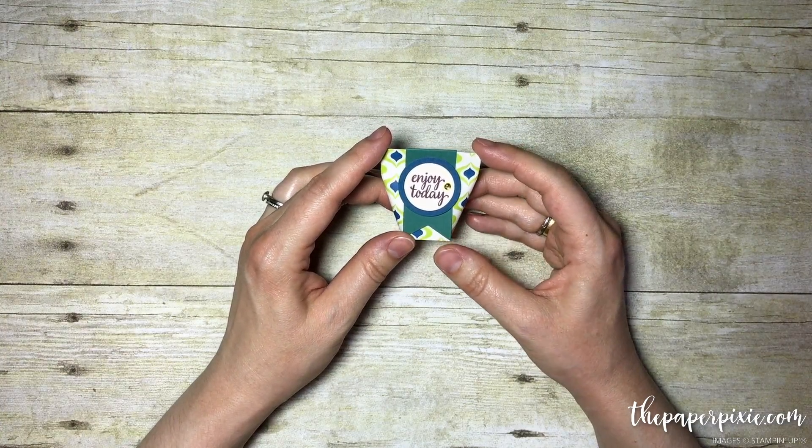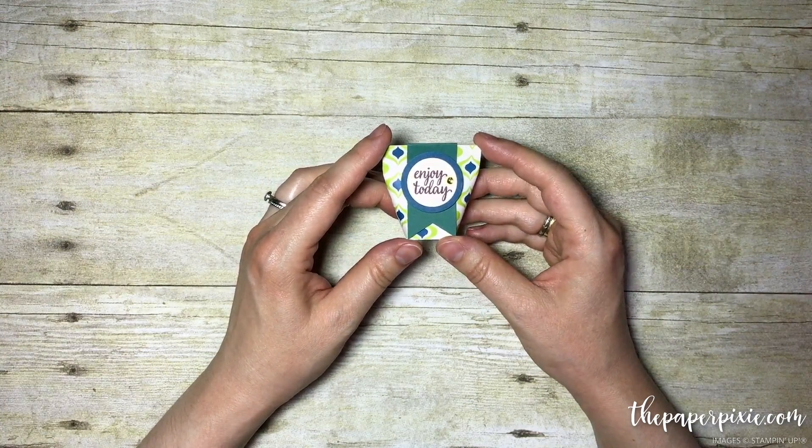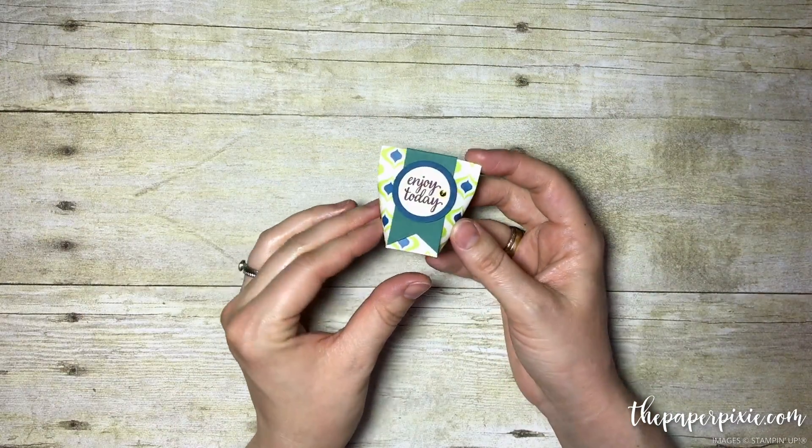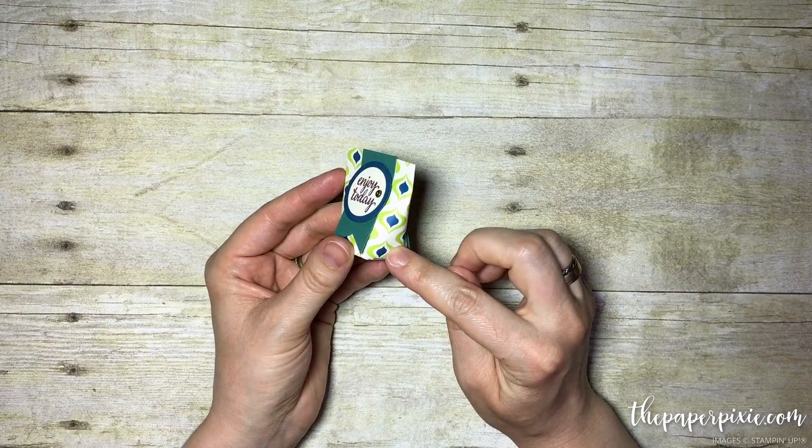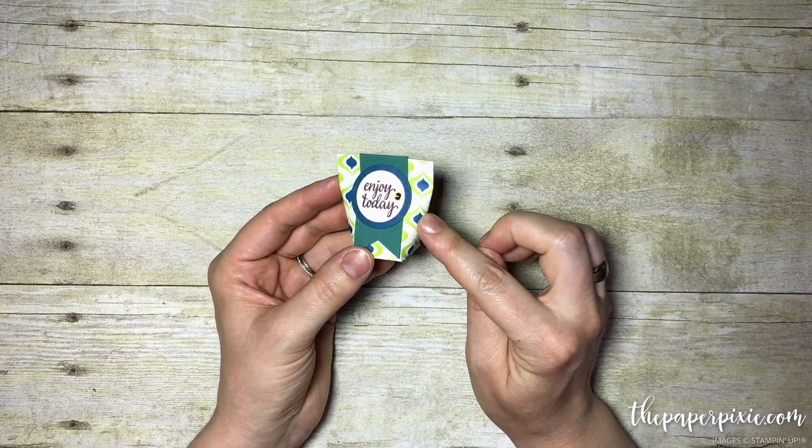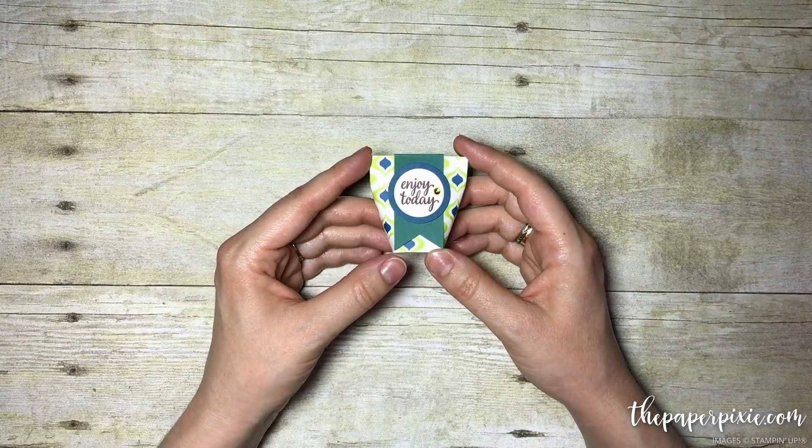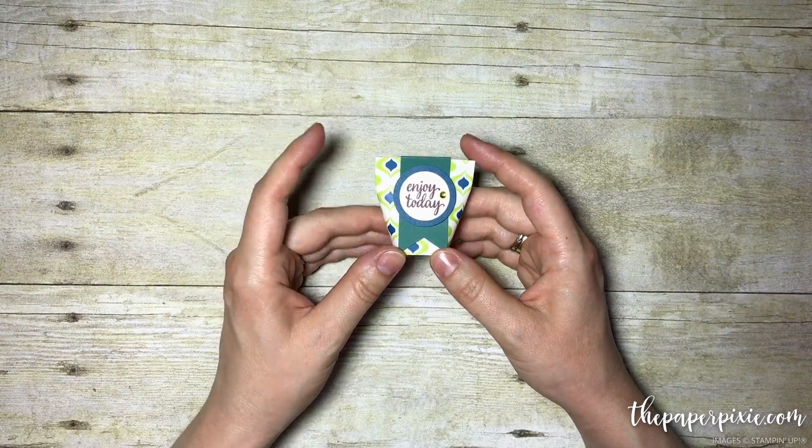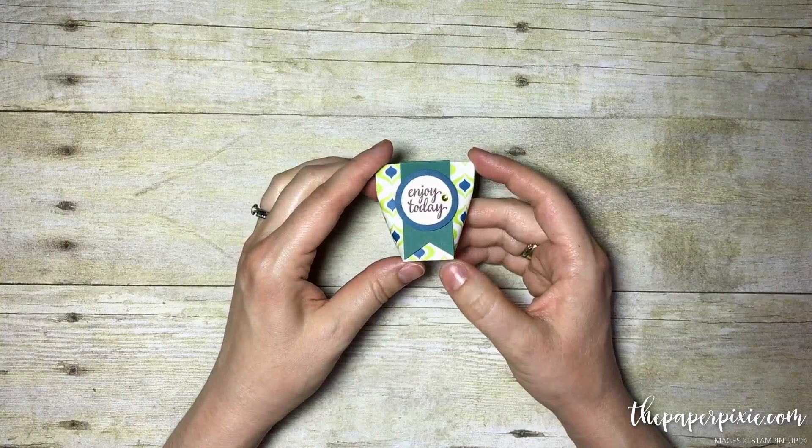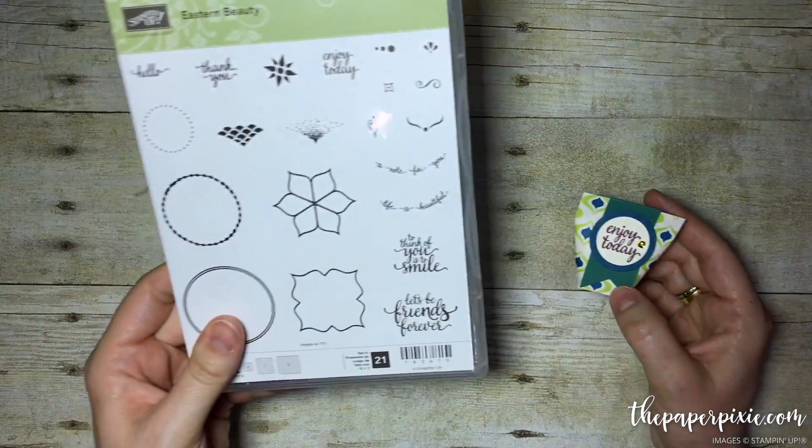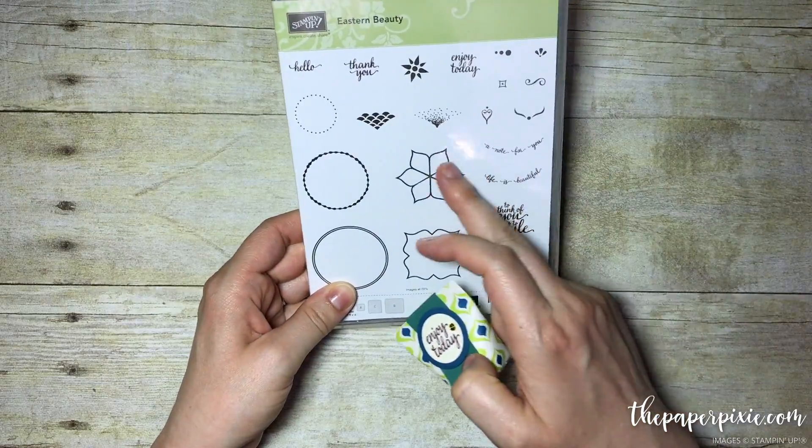So you can make a whole bunch of them to give to friends and family. This is going to showcase the new Eastern Palace designer series paper which is coming in the new catalog starting in June, but you as a customer will be able to pre-order it starting May 1st.